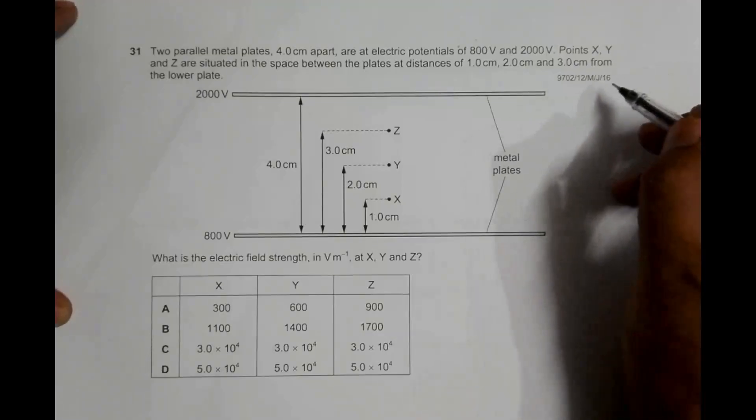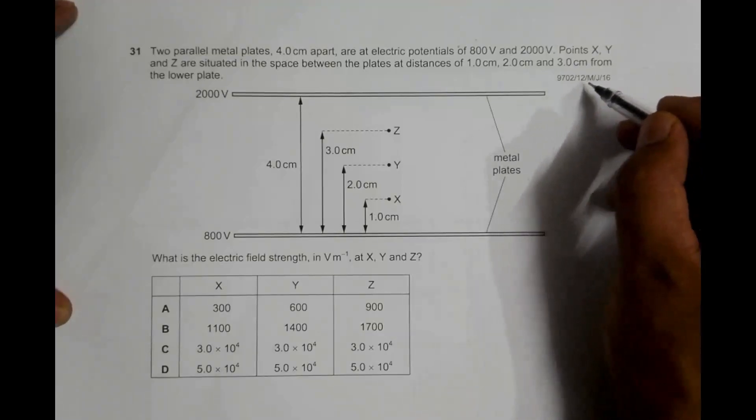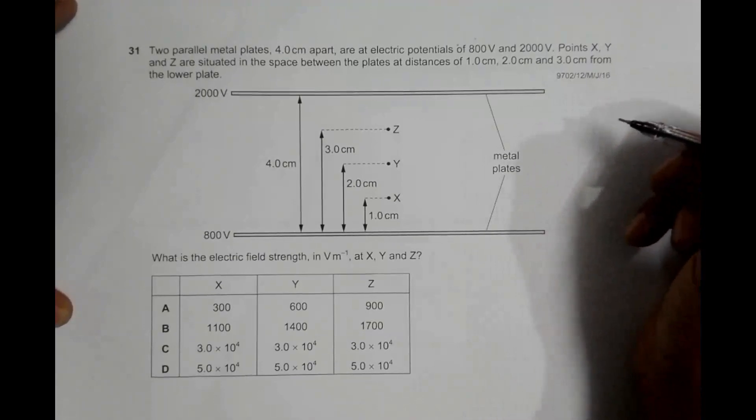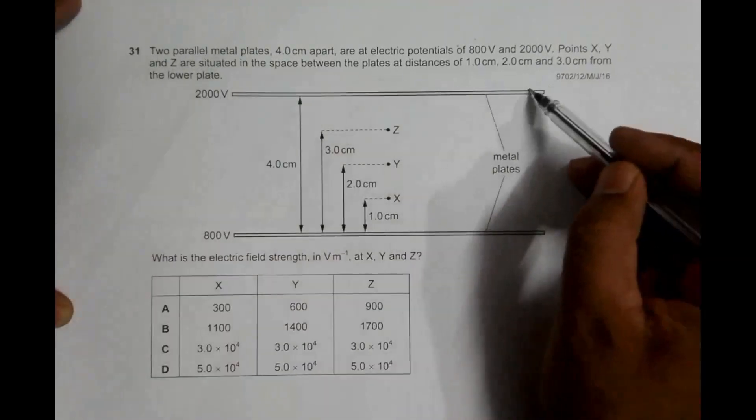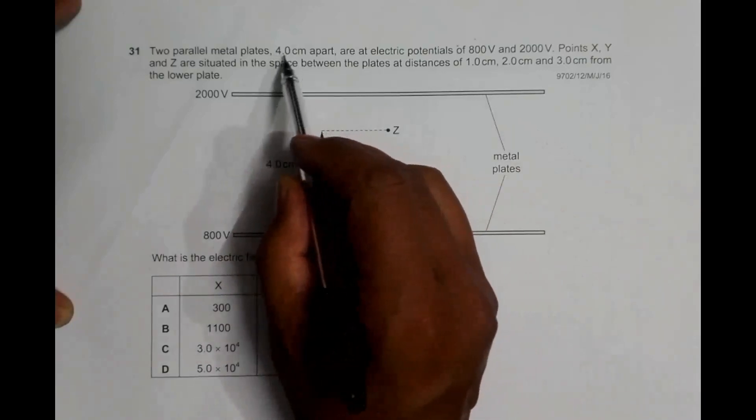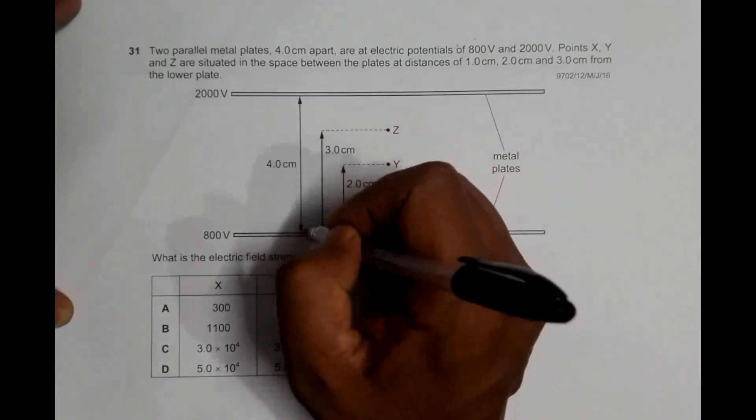Hello, this is a question from 2016 June Paper 1, question number 31. It says that two parallel metal plates, these are the metal plates, 4 centimeters apart, so this is the distance, 4 centimeters.